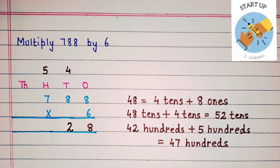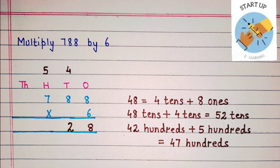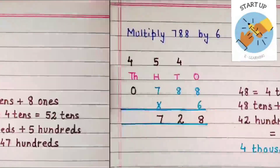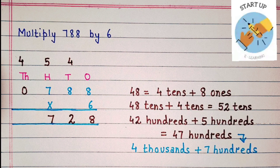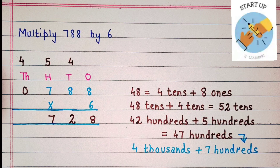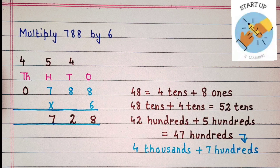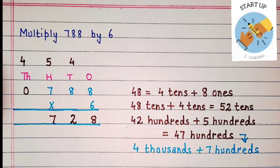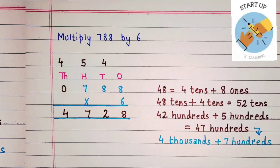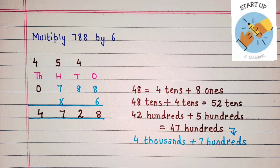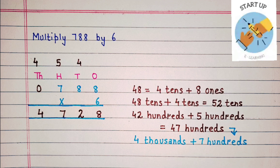Let's multiply 6 by 7, the digit at the 100's place. 6 sevens are 42, plus 5 hundreds which were carried over. 42 plus 5 is equal to 47 hundreds. Kids, 47 hundreds means we have 4 thousands plus 7 hundreds. So we are going to write 7 under 100's and 4 will be carried over on 1000's place. As we can see there is nothing under 1000's place, so we are going to multiply 6 by 0. 6 zeros are 0, plus 4 which were carried over. 0 plus 4 is equal to 4. We will write 4 under 1000's place. The product of 788 and 6 is 4728.